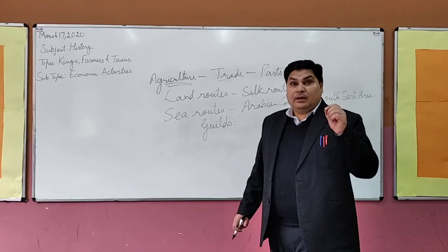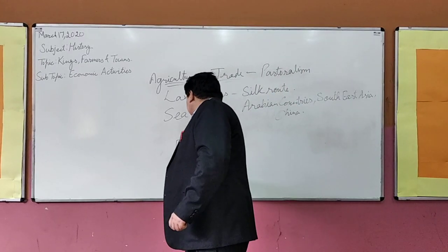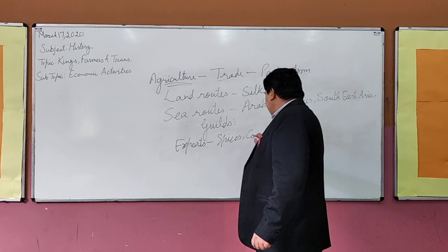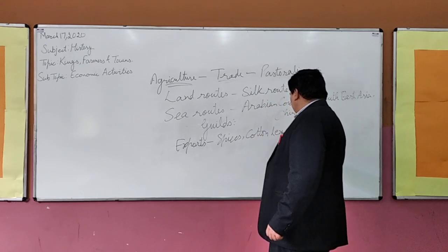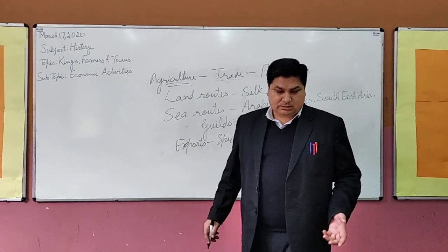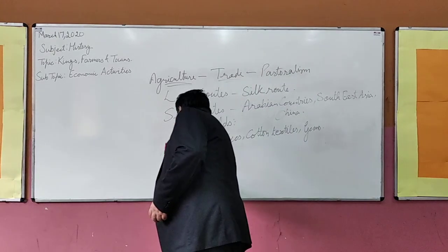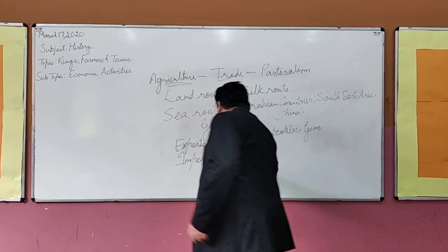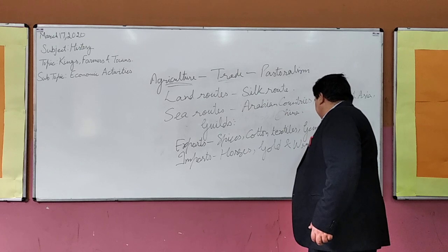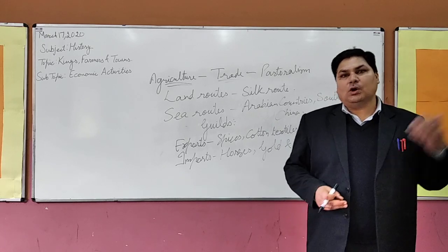Secondly, what were the goods that were exported? India at that time exported spices, cotton textiles, gems, and medicinal herbs. And what was imported? Imports included horses, gold, and wine. These were the main items of trade — what India bought from external countries, including from the Roman Empire.